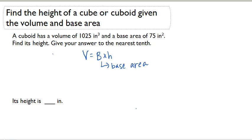Let's read the problem. It says a cuboid has a volume of 1025 cubic inches and a base area of 75 square inches. Find its height. Give your answer to the nearest tenth.